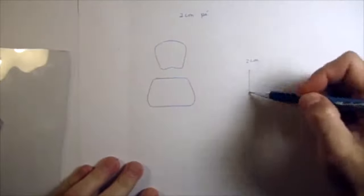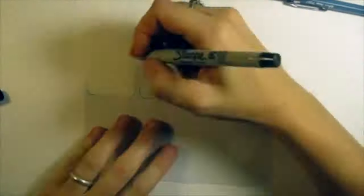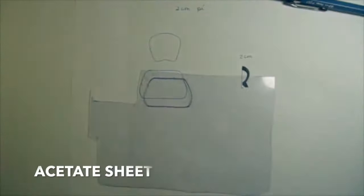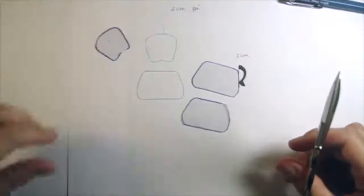Let's measure the height and draw a model for the chair's legs. Copy the sketches on a plastic sheet. Cut four pieces, two for each cushion.